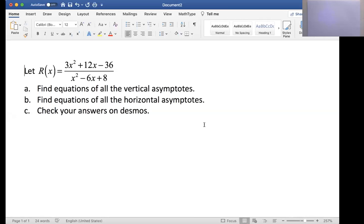Let's do our analysis and then we'll check it on Desmos. So we have R of x is 3x squared plus 12x minus 36 divided by x squared minus 6x plus 8.